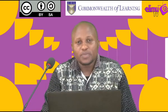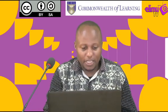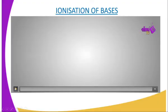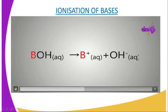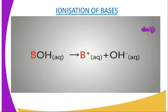What is ionization? Some bases ionize completely, while others ionize partially. Looking at the following illustration: hydroxide ions in this ionic compound, where we use B as the cation, dissociates or ionizes to give us B cations and hydroxide ions.